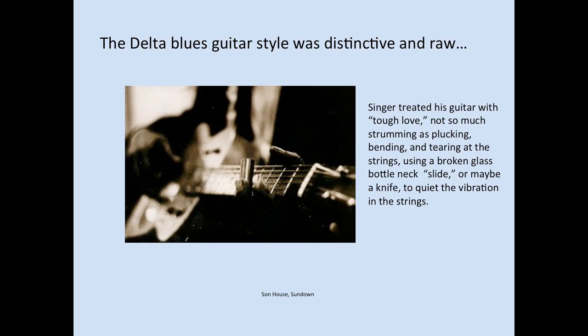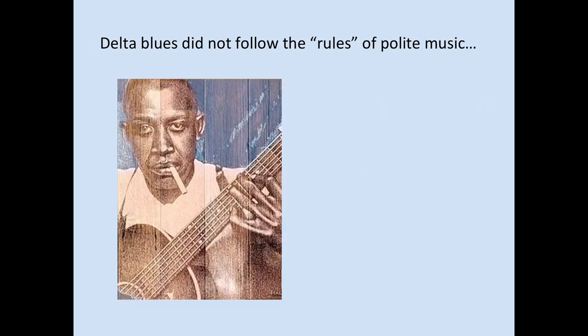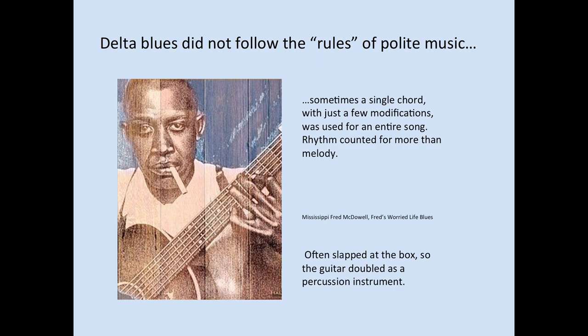The Delta blues guitar style was distinctive and raw. The singer treated his guitar with a tough love — not so much strumming as plucking, bending, tearing at the strings, using a broken glass bottleneck as a slide, or maybe even the flat side of a knife to quiet the vibration of the strings. You'll have a chance to listen to some Delta blues this week by following the links in your module. The Delta blues did not follow the rules of polite music — sometimes a single chord with just a few modifications was used for an entire song. Rhythm counted for more than traditional melody, and the player might even slap the box so the guitar could double as a percussion instrument.